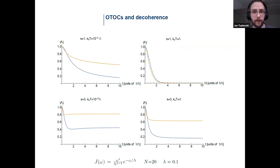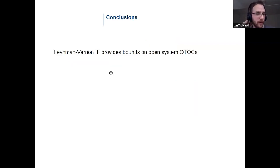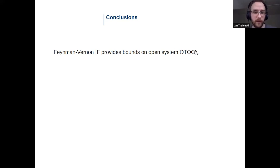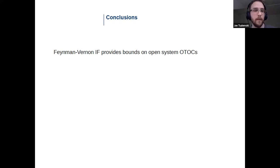To conclude: the Feynman-Vernon influence functional provides new information about open system OTOCs — for example, it allows you to study how decoherence affects these quantities. For numerical studies it is more general than approaches based on Lindblad equations, because you can treat strong coupling between your system and the environment in this framework.